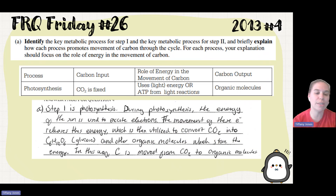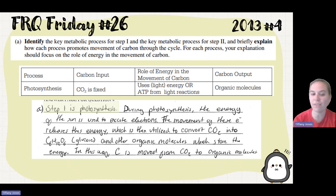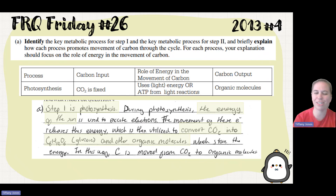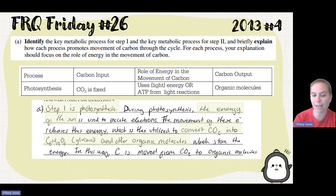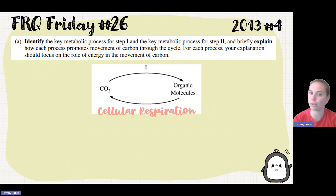A student said: step one is photosynthesis. During photosynthesis, the energy of the sun is used to excite electrons. The movement of these electrons releases energy, which is utilized to convert carbon dioxide into C6H12O6, glucose, and other organic molecules, which store the energy. In this way, carbon is moved from carbon dioxide to organic molecules.